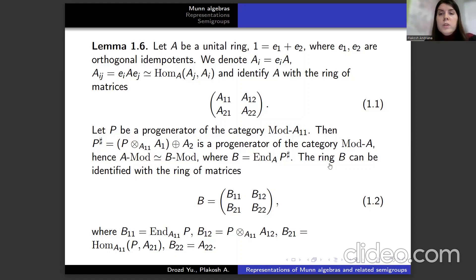The ring B can be identified with the ring of matrices, where B₁₁, B₁₂, B₂₁, B₂₂ are as follows.